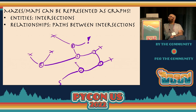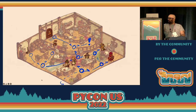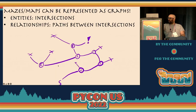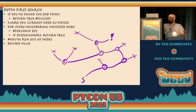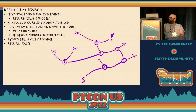First, I'll talk about converting maps to graphs. You can treat corridors as edges and intersections as nodes. So this layout naturally turns into a graph — nodes labeled alphabetically, dead-end nodes labeled as X, with edges connecting them. And you can use depth-first search, which is a nice simple recursive algorithm that's quick to implement and easy to use.